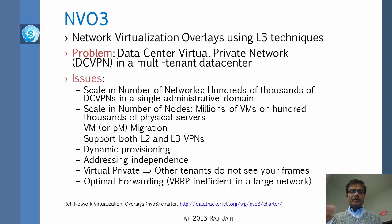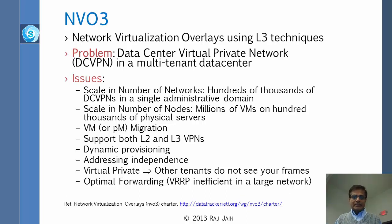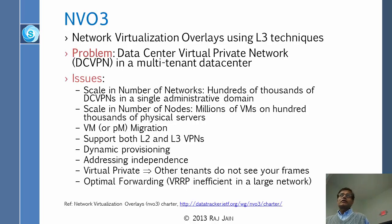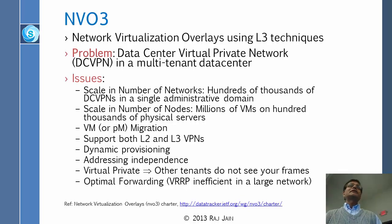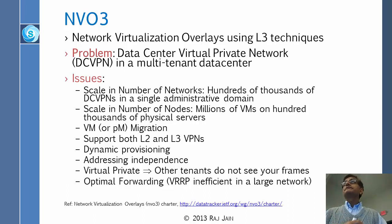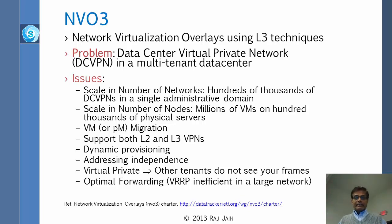Additional goals include addressing independence — you can use any kind of addressing you want, currently L2 or L3. Virtual private means other tenants do not see your frames: if you are in one apartment, you cannot peek into somebody else's. That means you cannot see packets belonging to another customer or competitor. And optimal forwarding means packets are not just ping-ponging inefficiently.